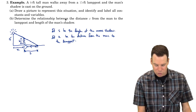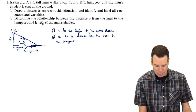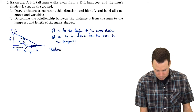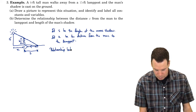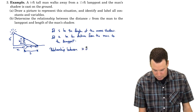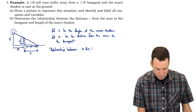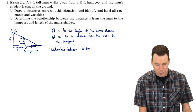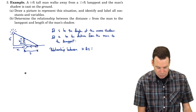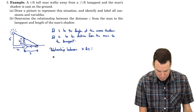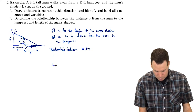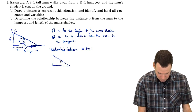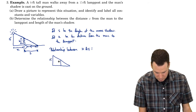Now for part B: determine the relationship between the distance x from the man to the lamp post and the length of the man's shadow. We need a relationship between x and S. Sometimes when we draw a diagram we add too much detail, which can cloud the connection between variables, so I'm going to extract just the pure geometric relationships.